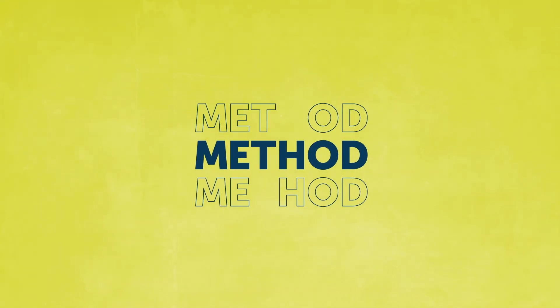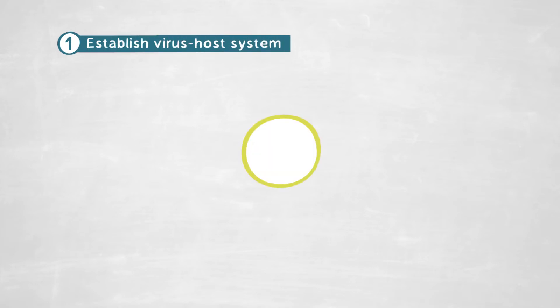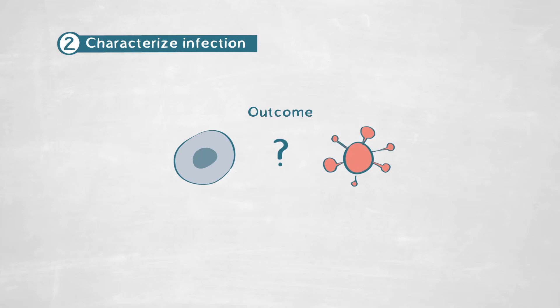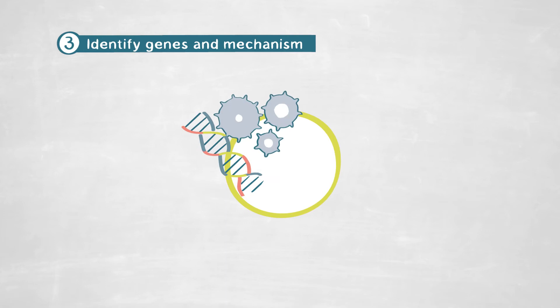We also aim to understand how this long-term relationship between virus and host impacts the co-evolution of these two partners. To answer our research question, first, we need to establish a very stable system of virus and host that we can reproduce and manipulate in the laboratory. Second, we need to characterize this chronic infection and assess what is the outcome for the host and the virus. And third, we need to identify the specific genes and the mechanisms underlying this chronic infection that allow coexistence in time between the host and the virus.